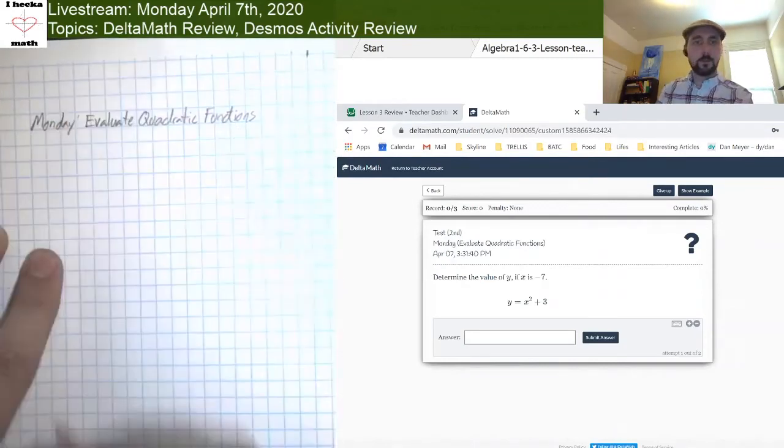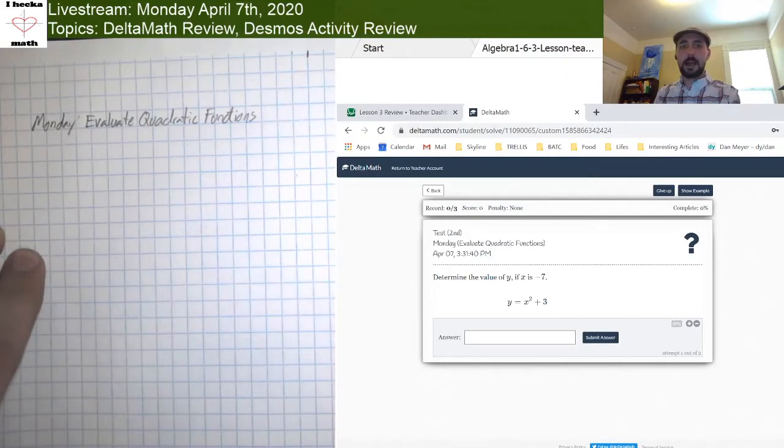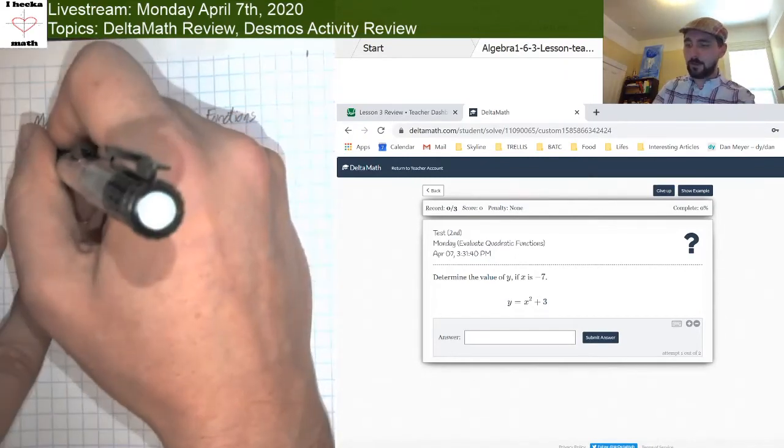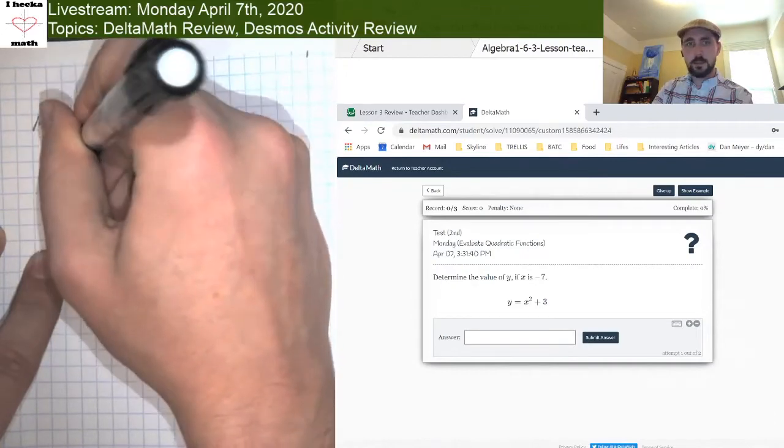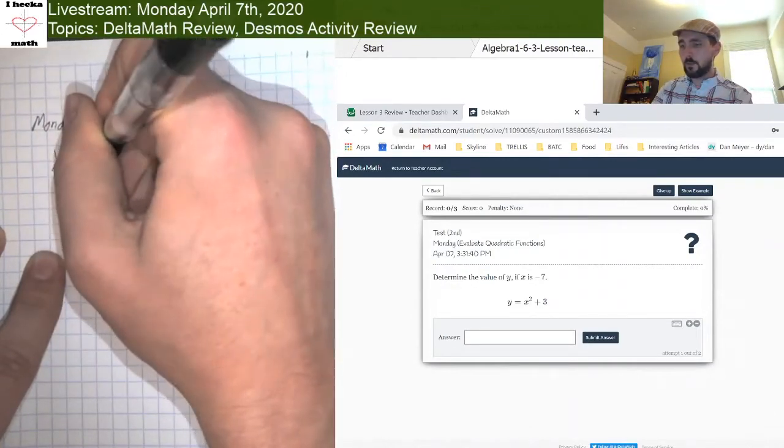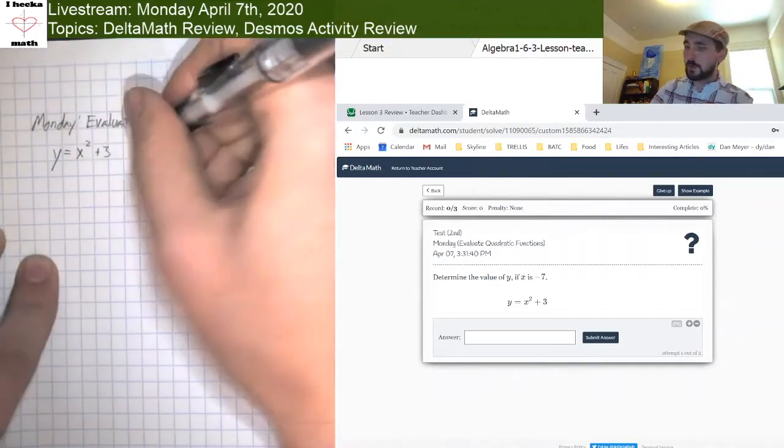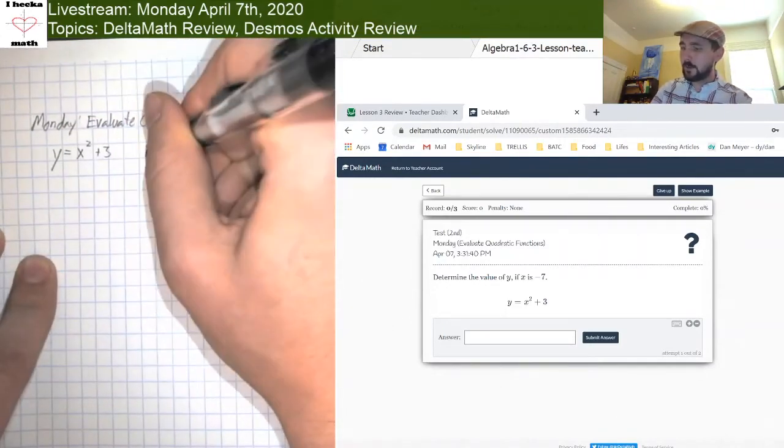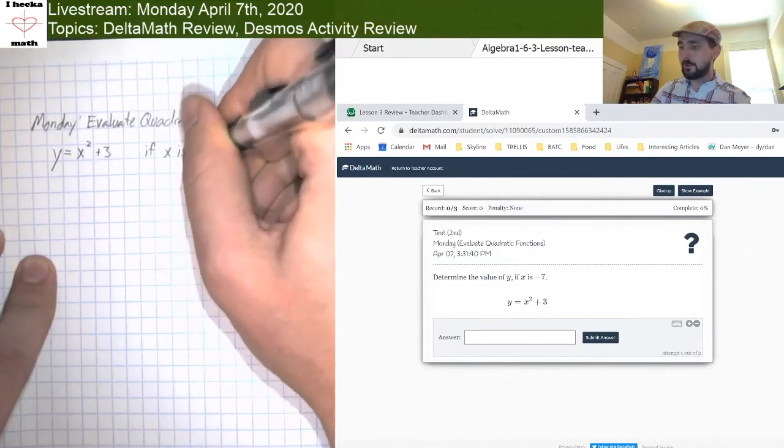All right. So I'm reading this problem and it says, determine the value of y if x is 7. And then we have this equation down here: y equals x squared plus 3. Oh, it looks like I misread it because it says if x is negative 7.